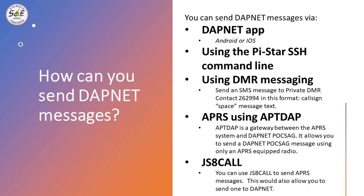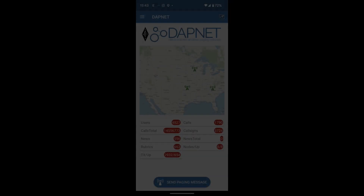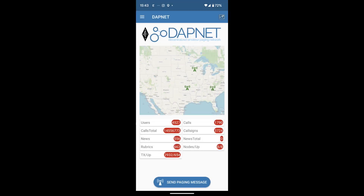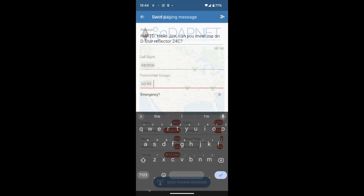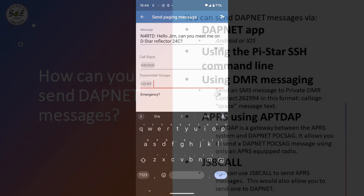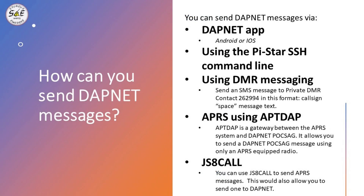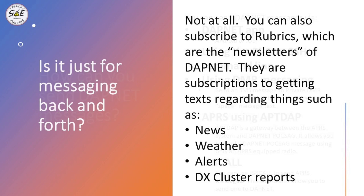The easiest way to send messages on the DAPNET network is using the DAPNET app, available for Android or iOS on your phone or tablet. You can also use the Pi-Star SSH command line, as well as DMR messaging, APRS using APT-DAP, and JS8Call, which will allow you to send messages over the APRS network and therefore also out to DAPNET. Links for all of these will be in the show notes.